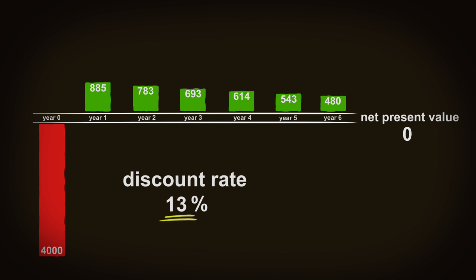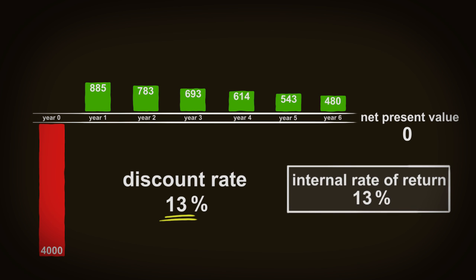This is the discount rate where the project turns from a positive net present value to a negative one and it's no longer viable. This hypothetical discount rate is called the internal rate of return, or the economic internal rate of return for an economic analysis. It's the discount rate where the project's net present value becomes zero.